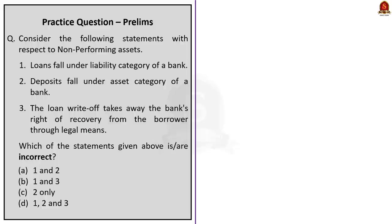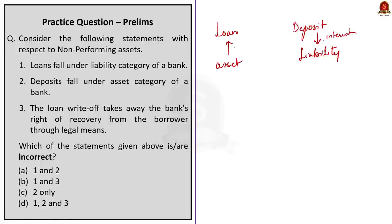Let me take the second question: consider the following statements with respect to non-performing assets. Statement 1 says loans fall under liability category of a bank. For a bank, a deposit is a liability because the bank has to pay interest to depositors, but loans are assets because loans earn interest which is income. So statement 1 is incorrect. Statement 2 says deposits fall under asset category of a bank — this is incorrect as deposits are a liability. Statement 3 says loan write-off takes away the bank's right of recovery from the borrower through legal means. This is incorrect because in our discussion I said the loan write-off does not take away the bank's right of recovery. The question asks you to choose the incorrect statements, and all three are incorrect. So the correct answer is option D, 1, 2, and 3.